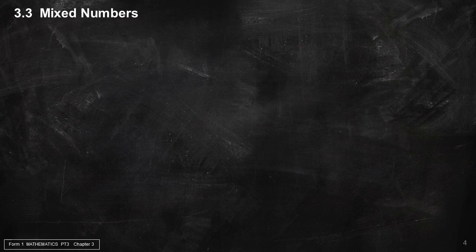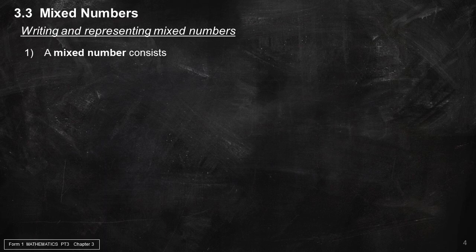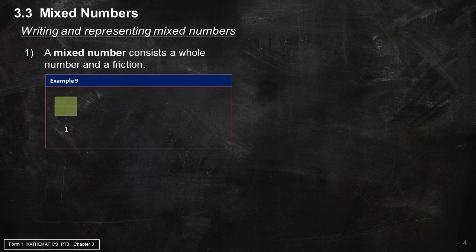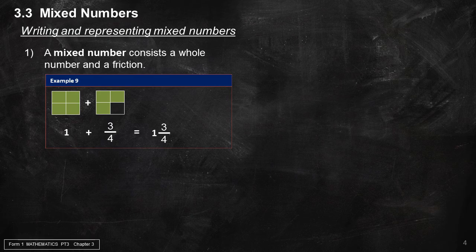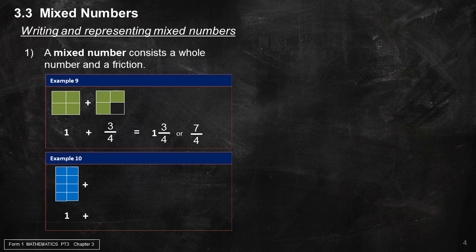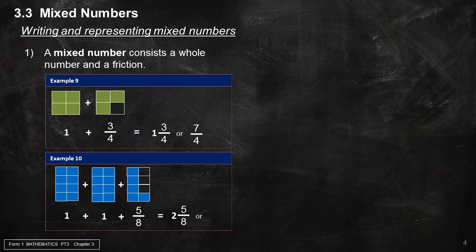Section 3.3: Mixed Numbers — Writing and representing mixed numbers. A mixed number consists of a whole number and a fraction. Example 9: 1 plus 3 over 4 equals 1 and 3 over 4, or 7 over 4. Example 10: 1 plus 1 plus 5 over 8 equals 2 and 5 over 8, or 21 over 8.